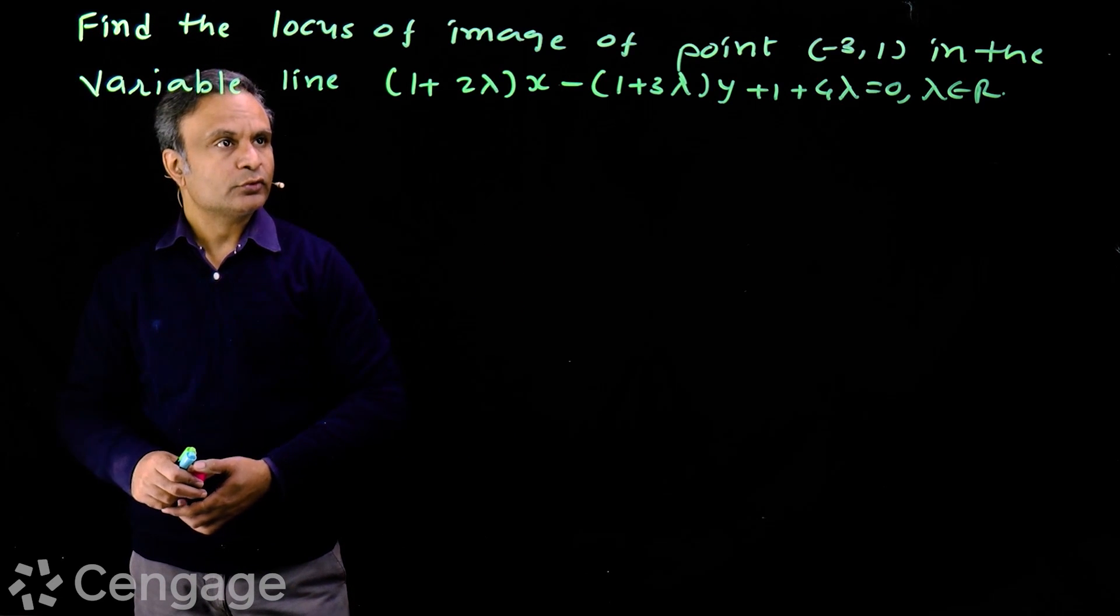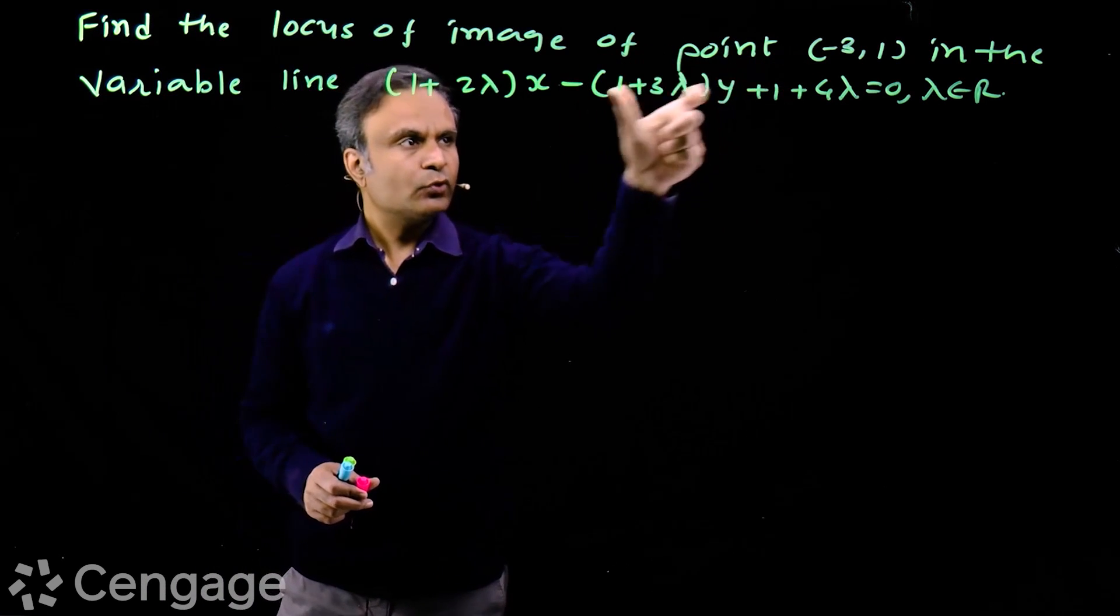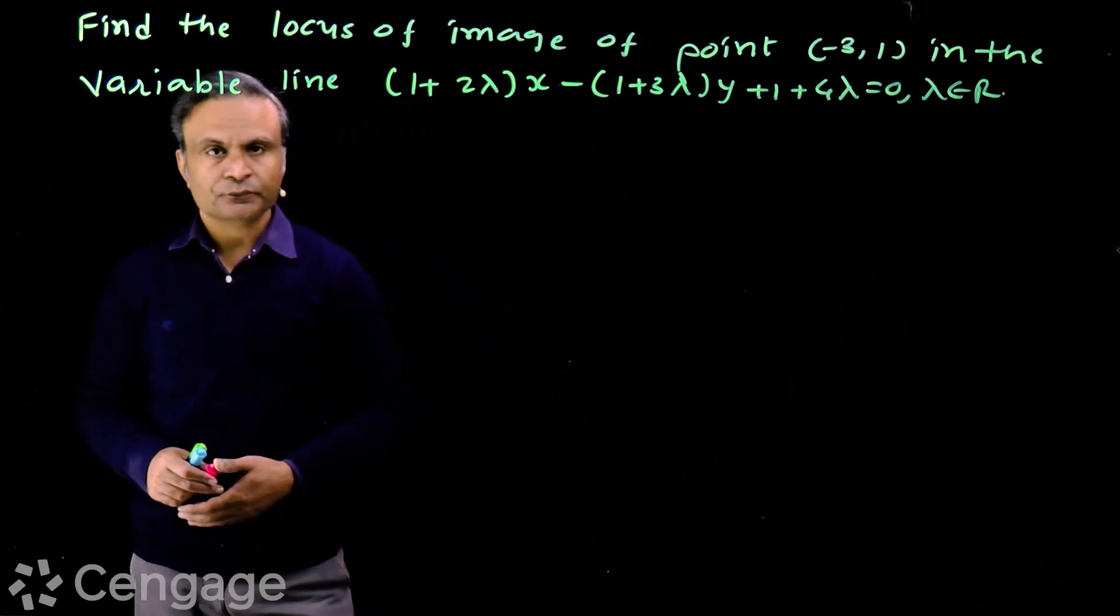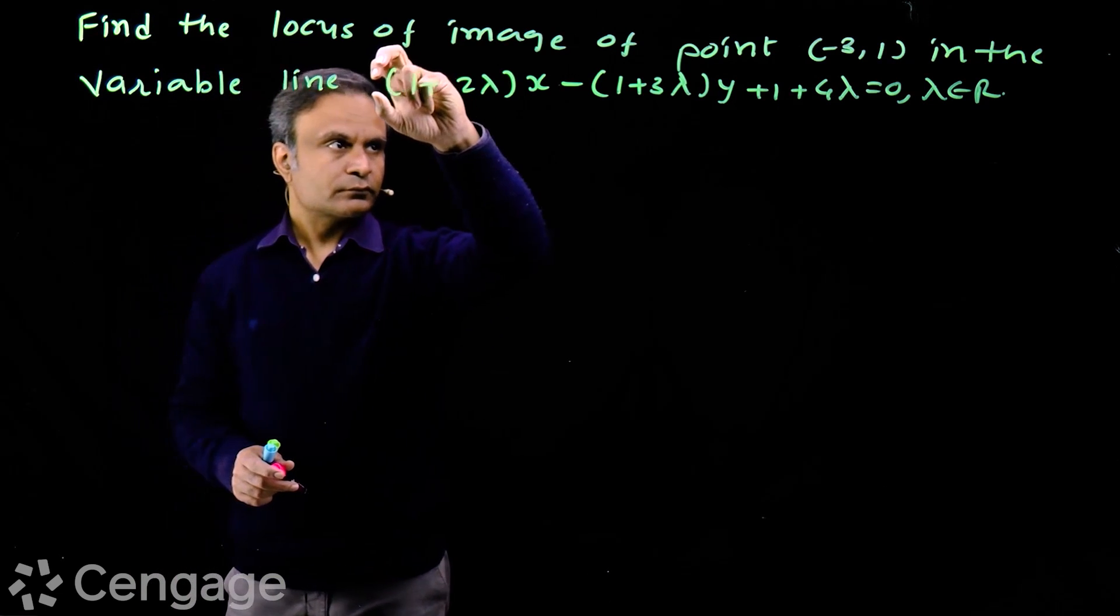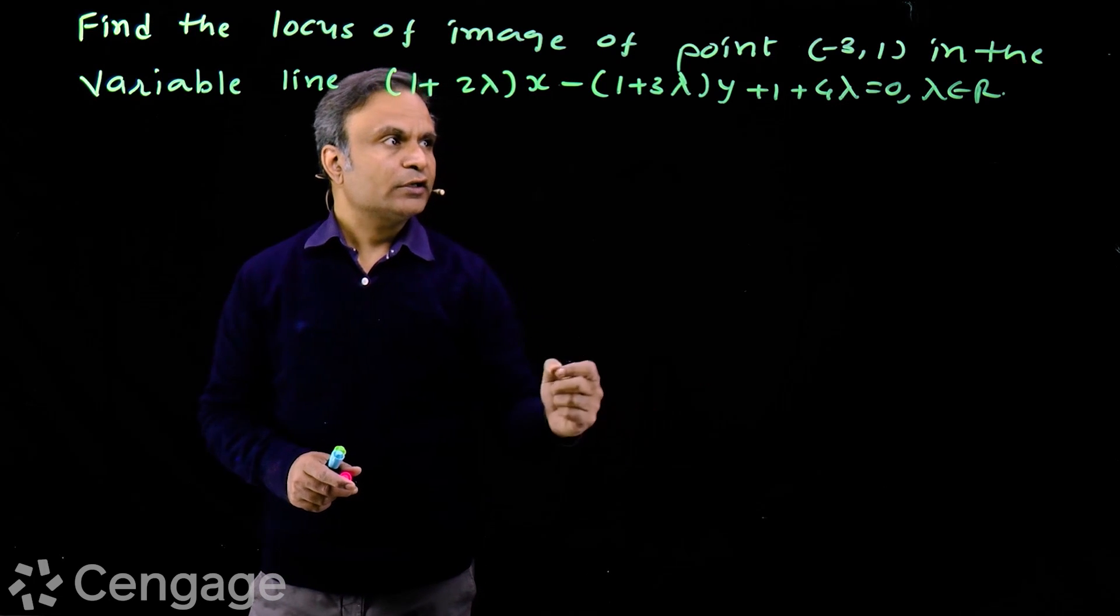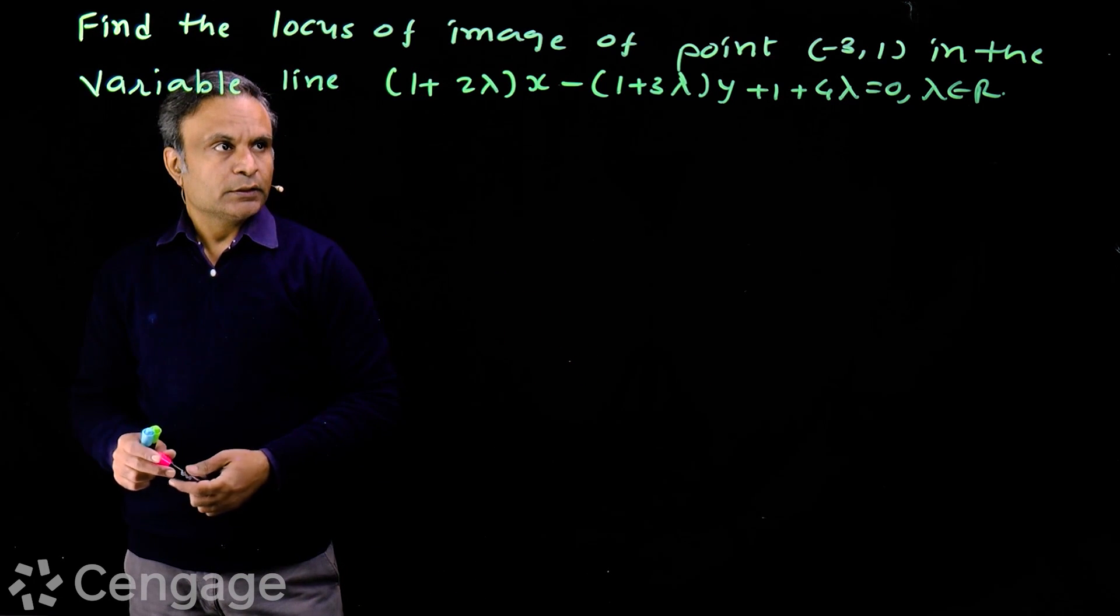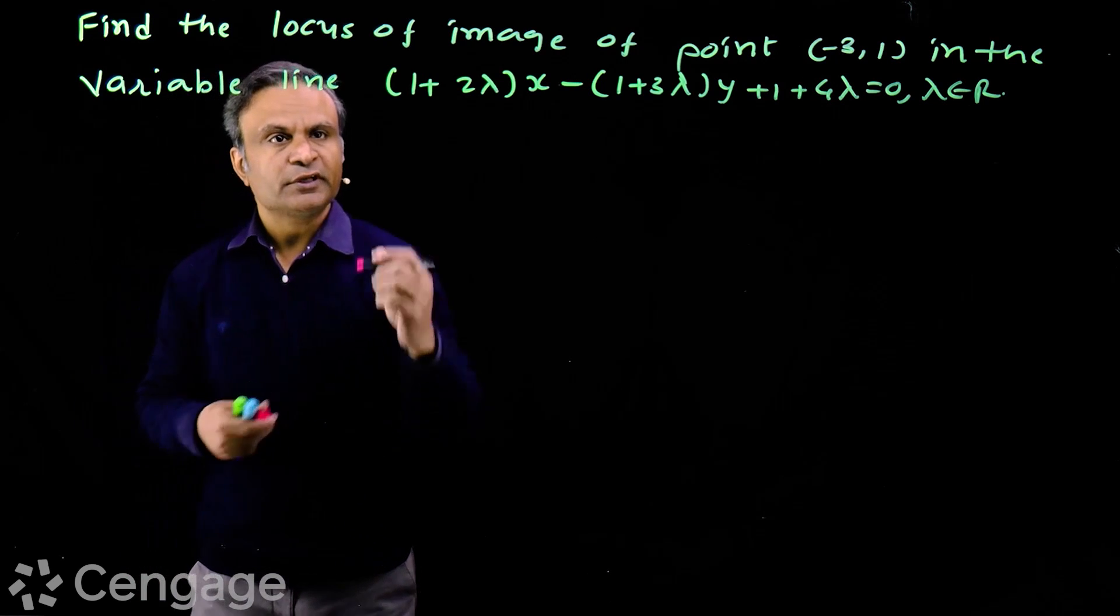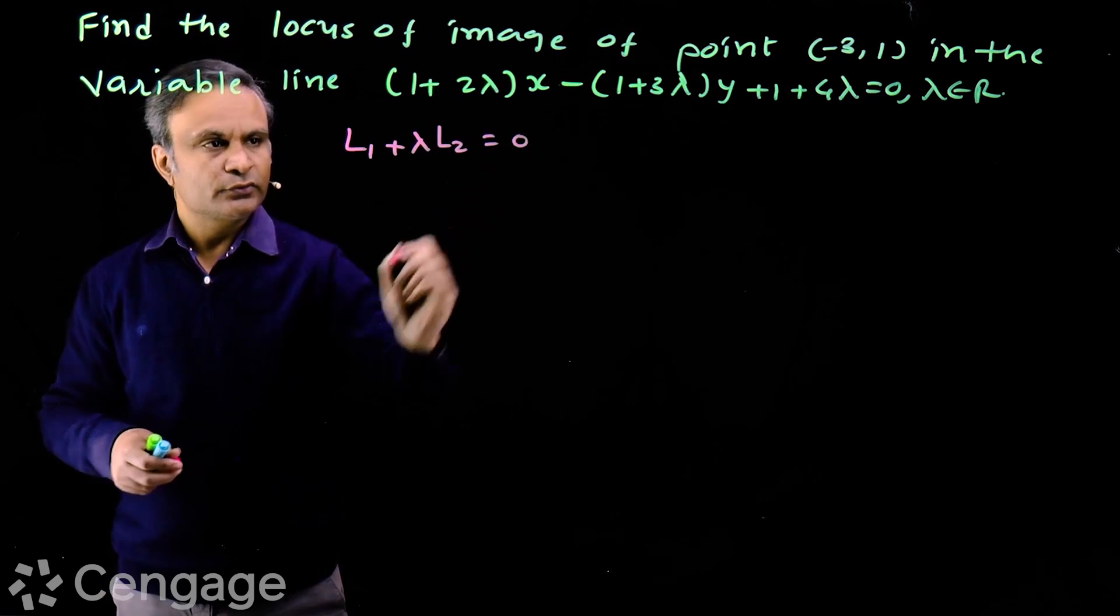Now this is a variable straight line where lambda can take any real value. Then we have to find locus of image of this point in this variable line. First of all, this is equation of family of lines concurrent at some fixed point. For that, let's put the line in this form: L1 + λL2 = 0.